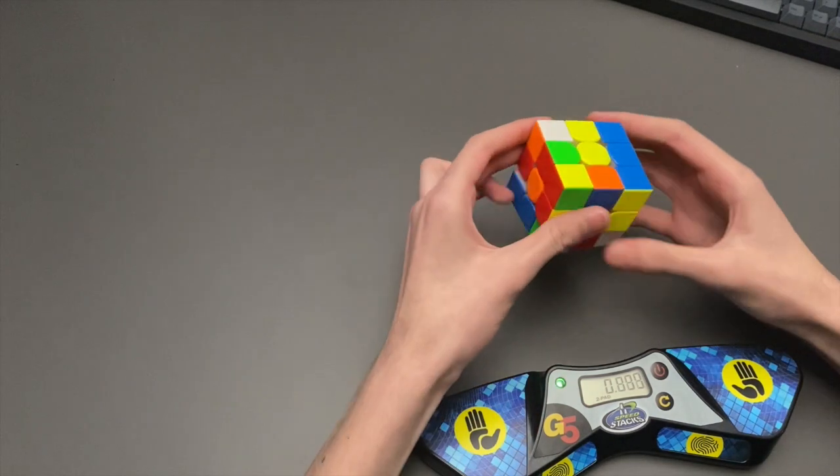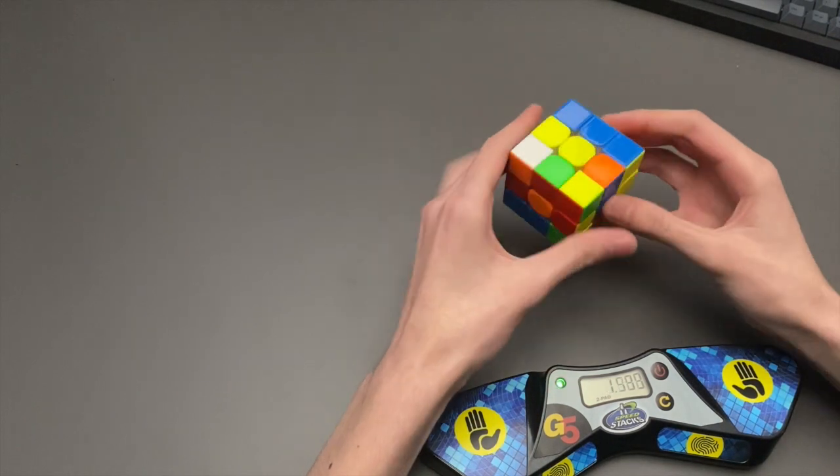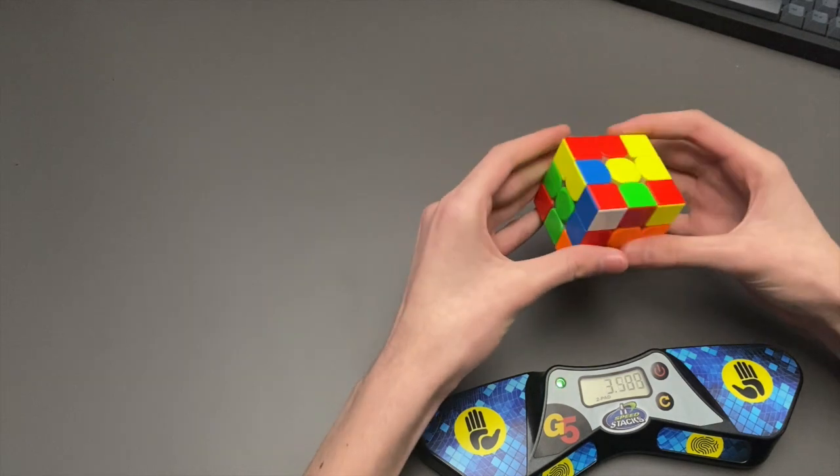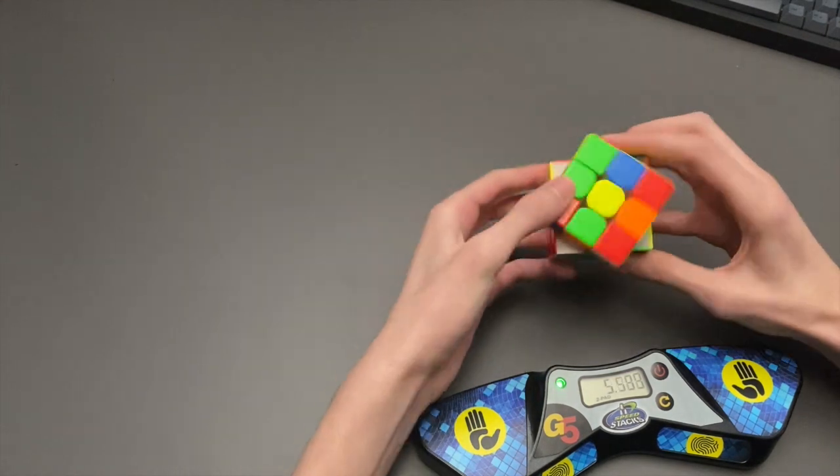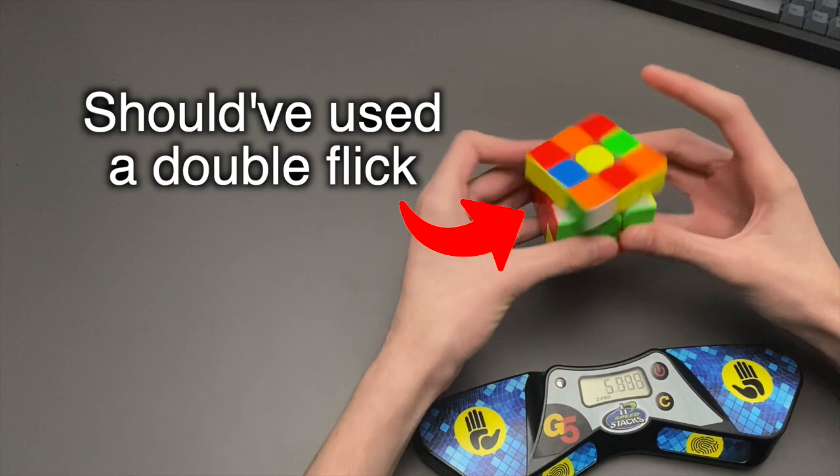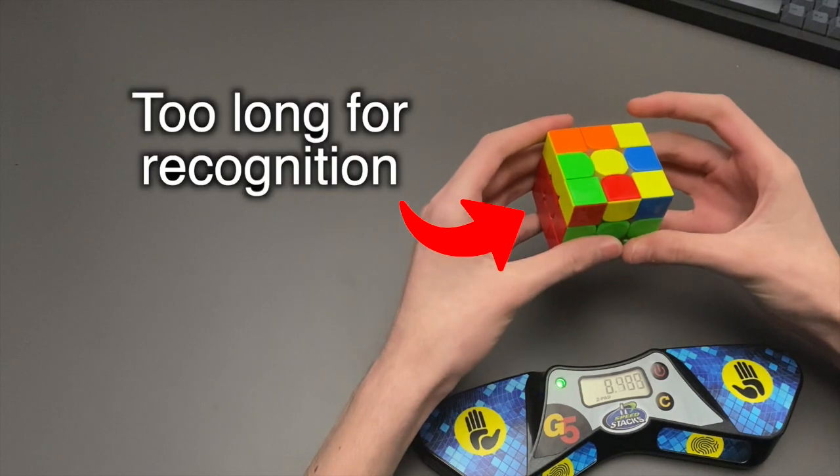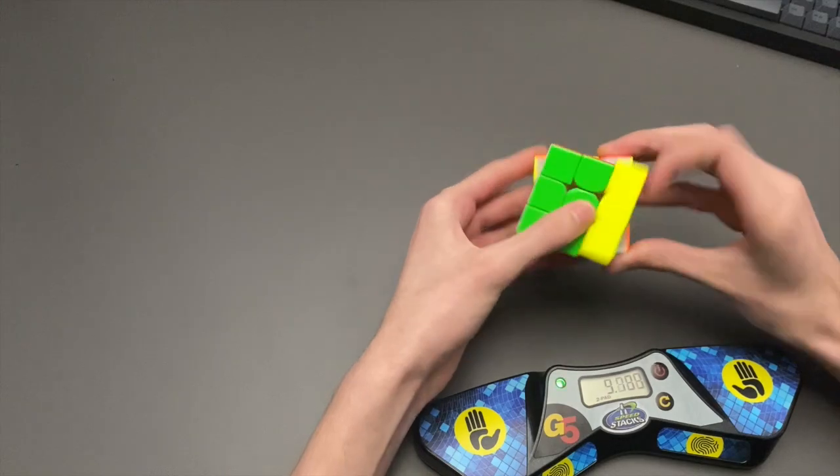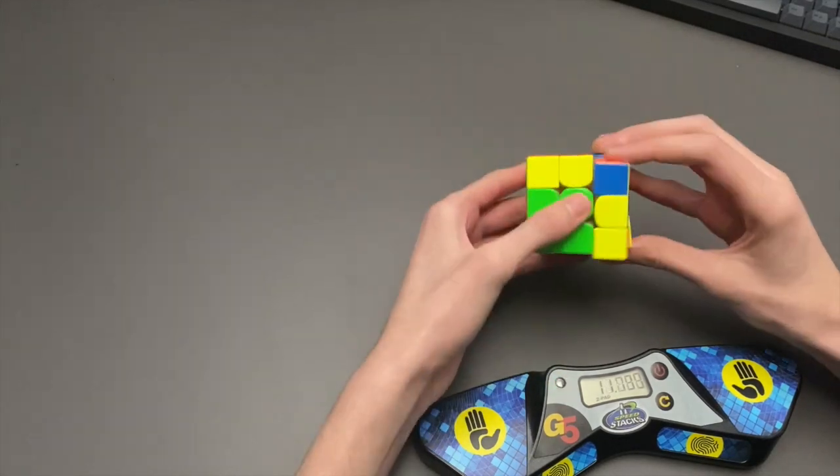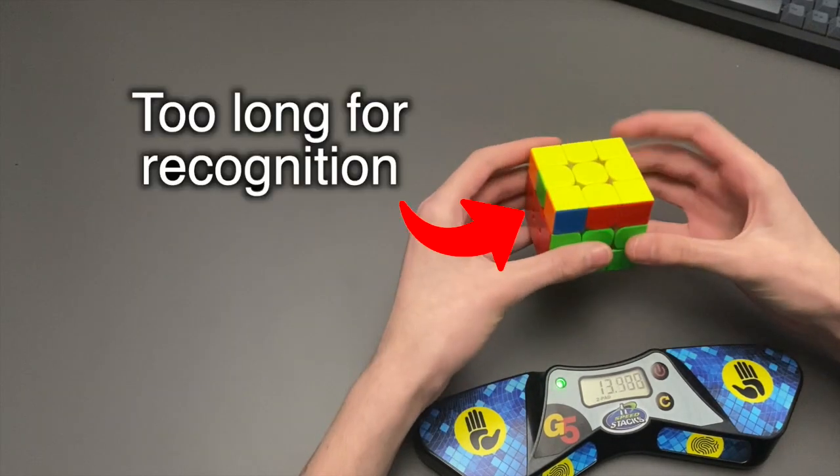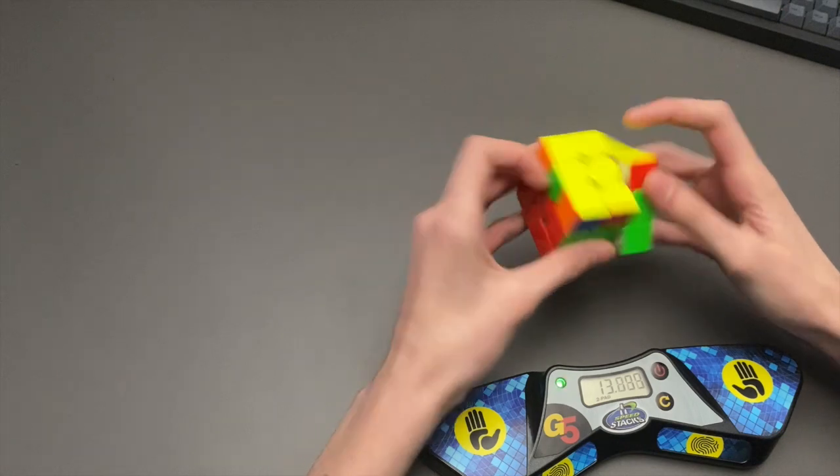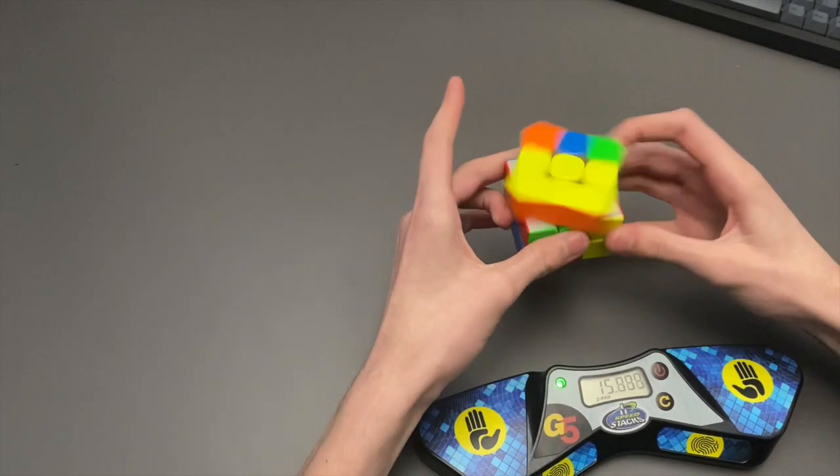We all know that every cuber makes mistakes, even the world record holders. So in stage one, you should be focusing on those mistakes and trying to drill them out of your solves. This can be through slow solves or deliberate practice, in which you try to fully concentrate on what you are doing and how you can do it better. One of the ways you can also focus on these mistakes is by getting critique on your solves. This can be via recording your own solves and slowing them down to analyze and recognize where you are going wrong.